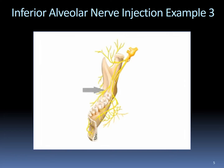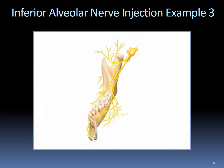The lingual nerve descends between the medial pterygoid muscle and the ramus of the mandible until it reaches the base of the tongue, then courses anteriorly providing sensation to the anterior two-thirds of the tongue, the floor of the mouth, and the lingual gingiva of the mandibular teeth to the midline. The inferior alveolar nerve travels inferiorly and laterally between the ramus and the medial pterygoid muscle, enters the mandible at the mandibular foramen, and courses anteriorly. It provides innervation to all mandibular teeth and associated buccal and lingual bone. At approximately the second premolar, it gives off the mental branch, which exits via the mental foramen providing sensation to the labial soft tissues from the premolars to the midline, the chin, and lower lip.